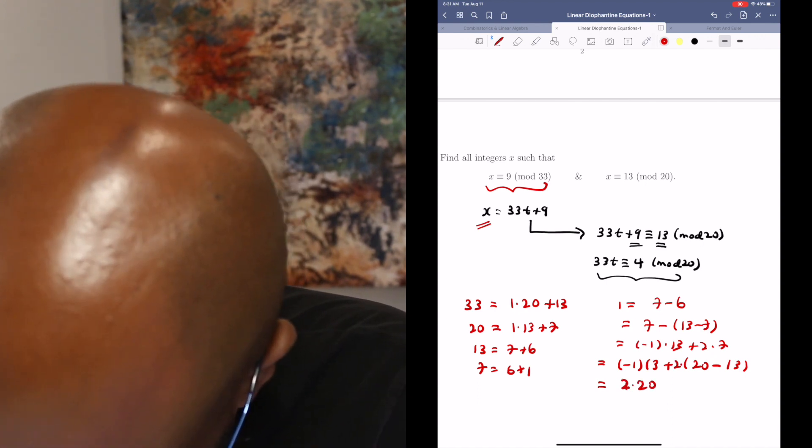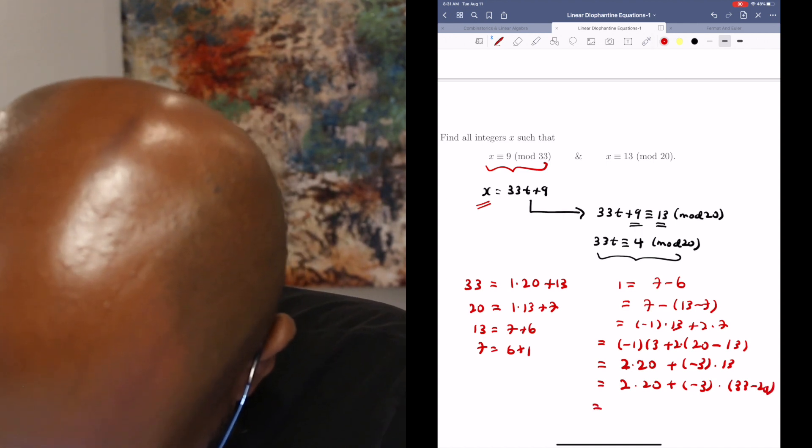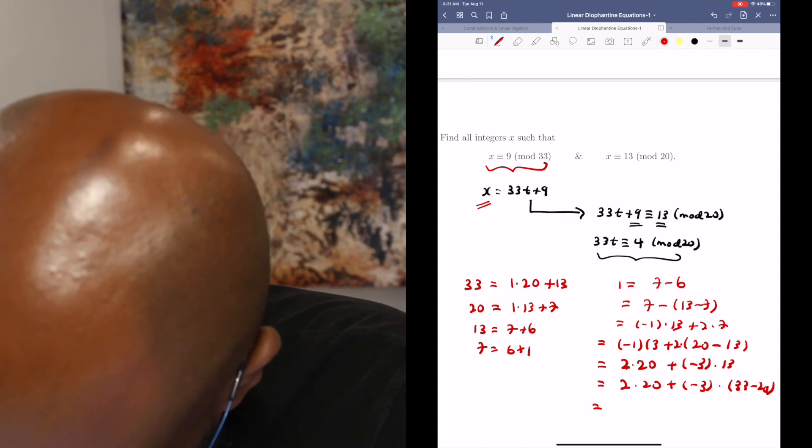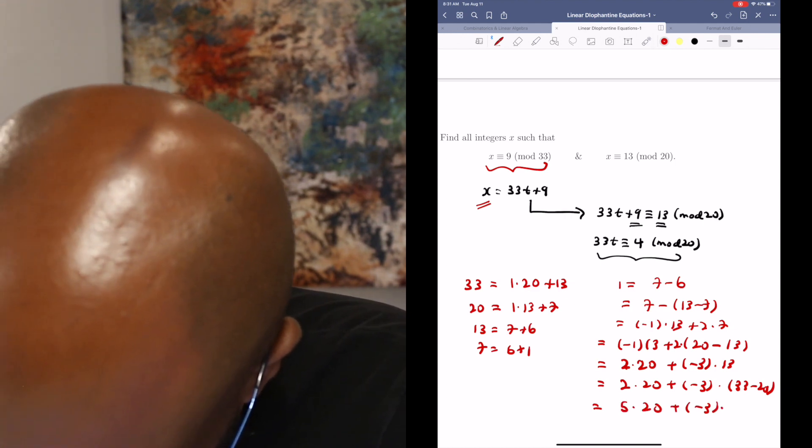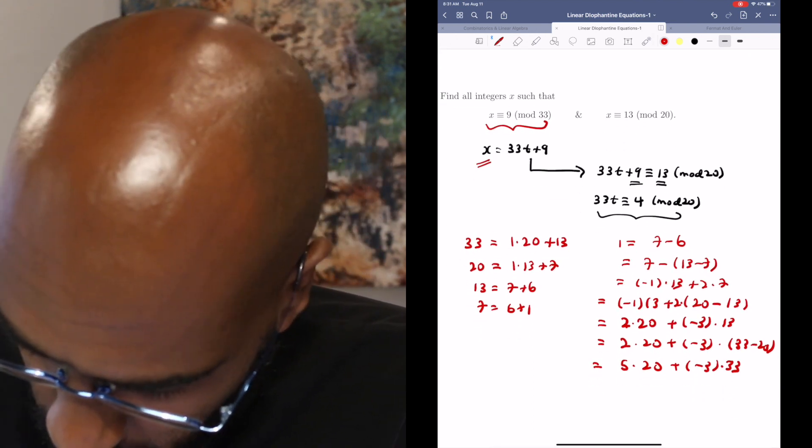So we get 2 copies of 20 plus negative 3 copies of 13. And then finally, the negative 3 being 33 minus 20, giving us a total of 5 copies of 20 and negative 3 copies of 33. So that's what 1 is.